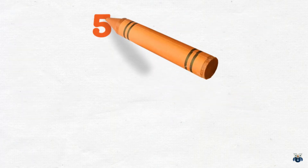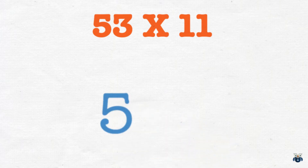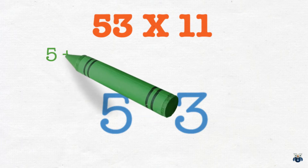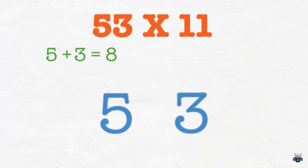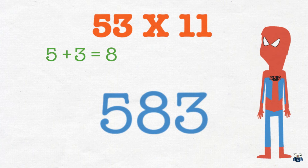That was fast — much faster, right? Let's attempt another problem. What is 53 times 11? As before, we write down both digits of the Multiplicand with a gap between them. We then add up the digits — 5 plus 3 is equal to 8 — and this gives us 583, our final answer.